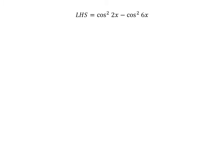The left hand side of the equation to be proved is square of cosine of 2x minus square of cosine of 6x. This expression is in the form of a squared minus b squared, which equals (a minus b)(a plus b). So it equals (cosine of 2x minus cosine of 6x) times (cosine of 2x plus cosine of 6x).